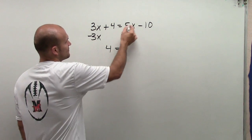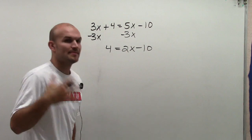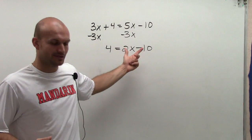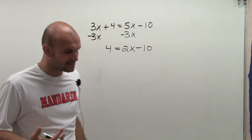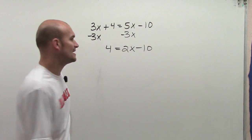Therefore, I have 4 equals 5x minus 3x is 2x minus 10. And by doing that, you can now see what I did is I eliminated a variable. I combined my like terms. And now I have a two-step equation, which again, I can solve.